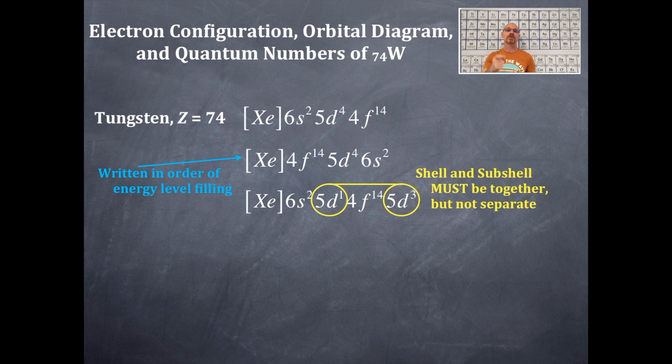And then 5d2, 5d3. Now, you have to combine the 5ds together. That is, the shell and the subshell must be together. You can't separate them out. That is a no way, no can do. That will not be acceptable. It's also not just a 5d3. All right, so hopefully that makes sense. We're going to cross that out. You're not going to use that ever. That will never be correct.